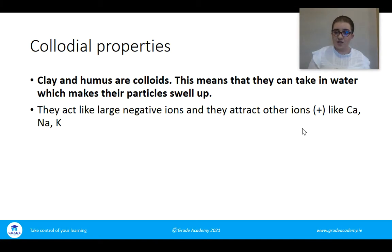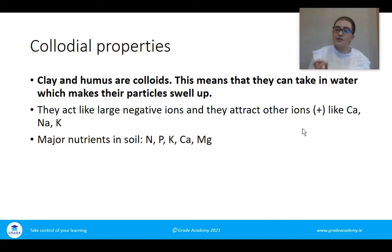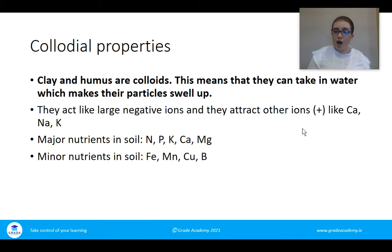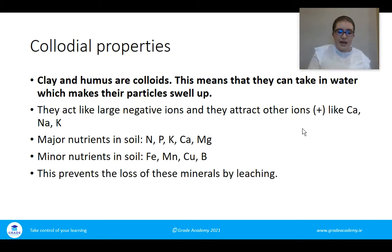Fertilizer adds positive ions to the soil as well. The major nutrients in the soil are N, P, and K — nitrogen, phosphorus, and potassium — the main nutrients needed for plant growth. Calcium and magnesium are also important. Minor nutrients include iron, manganese, copper, and boron, present in smaller amounts — similar to trace elements in the human diet, such as iron, which is needed only in small amounts.